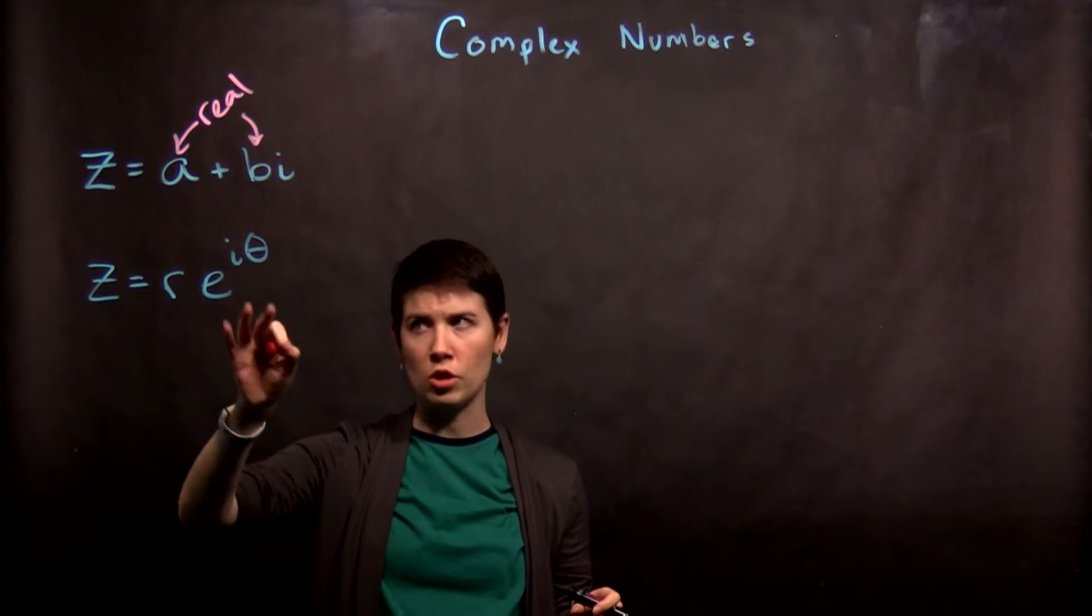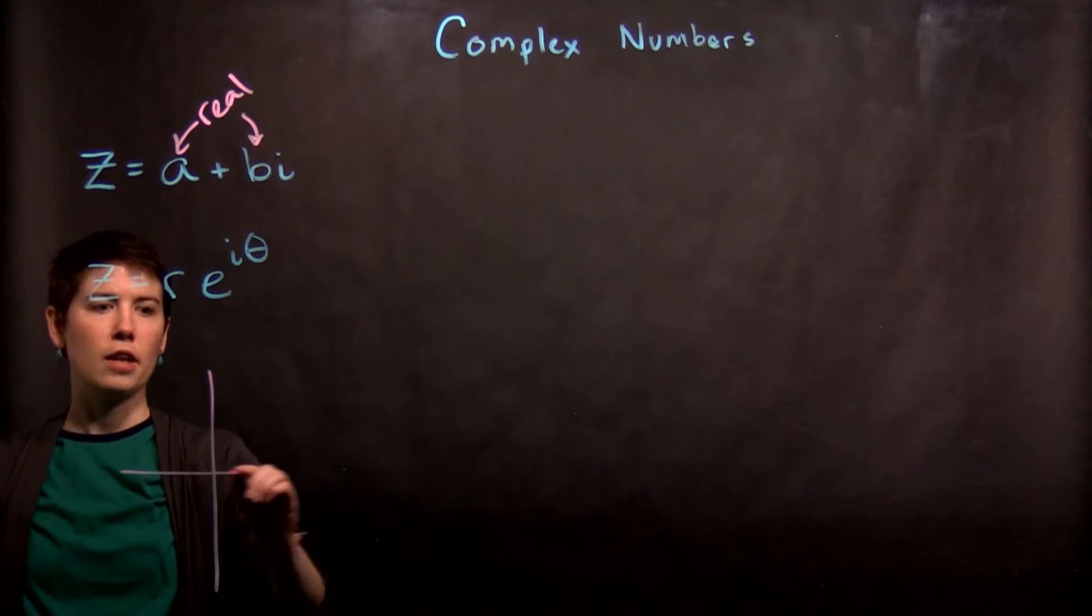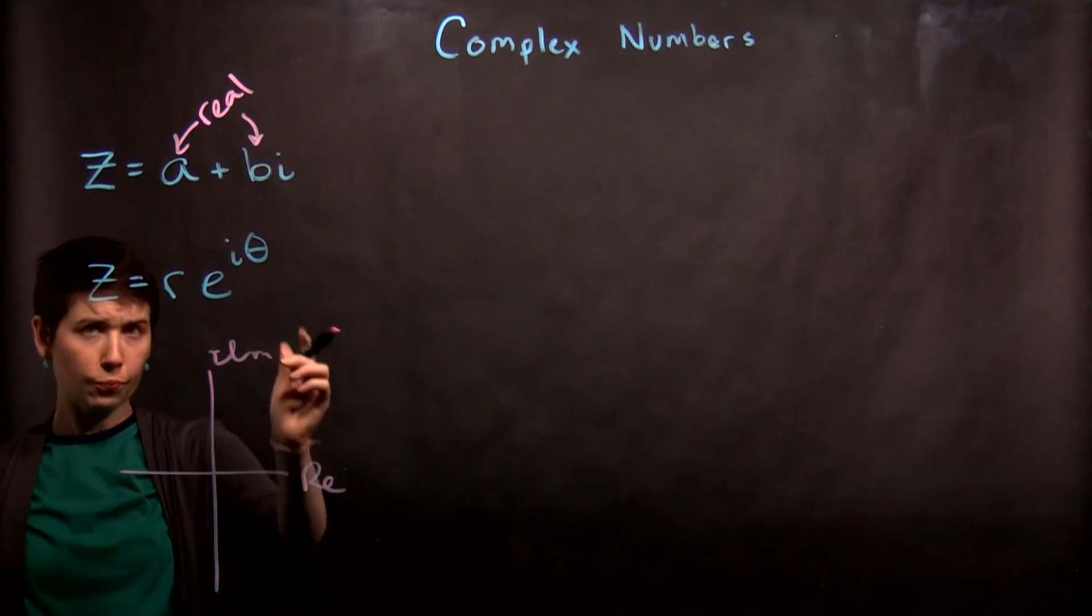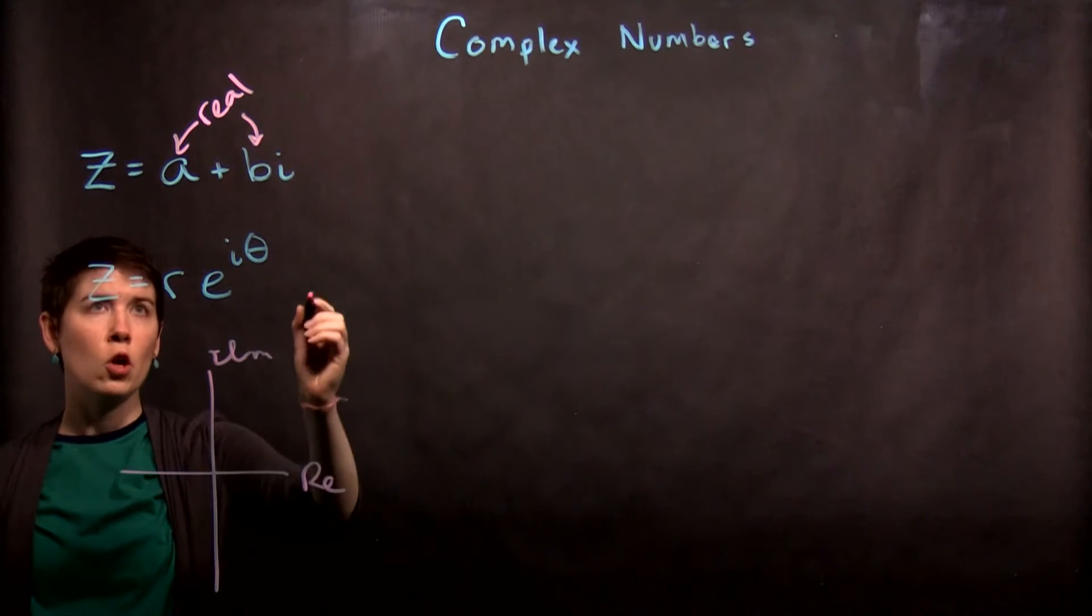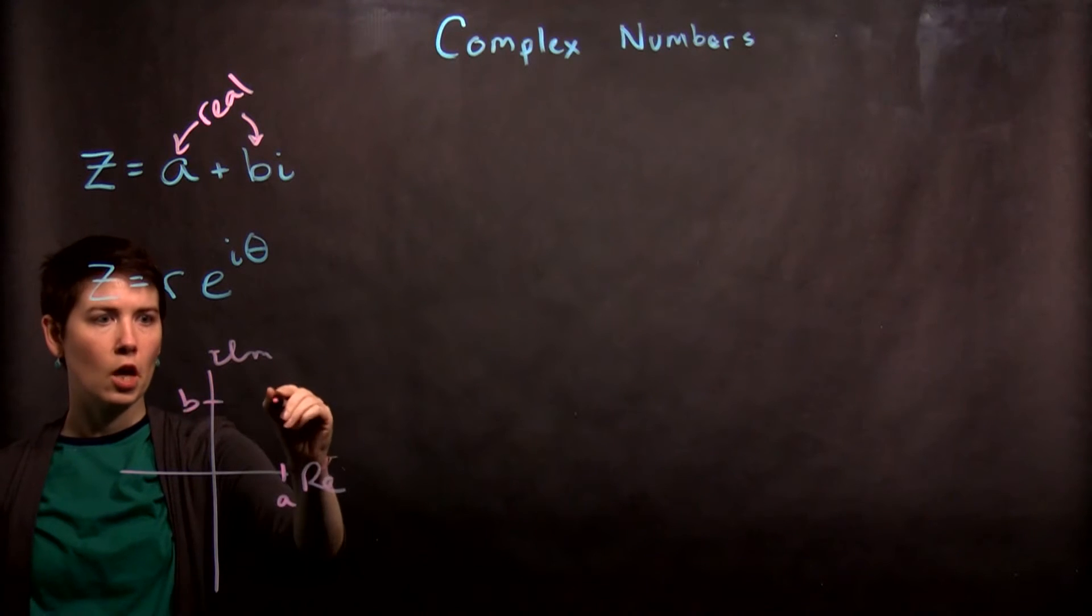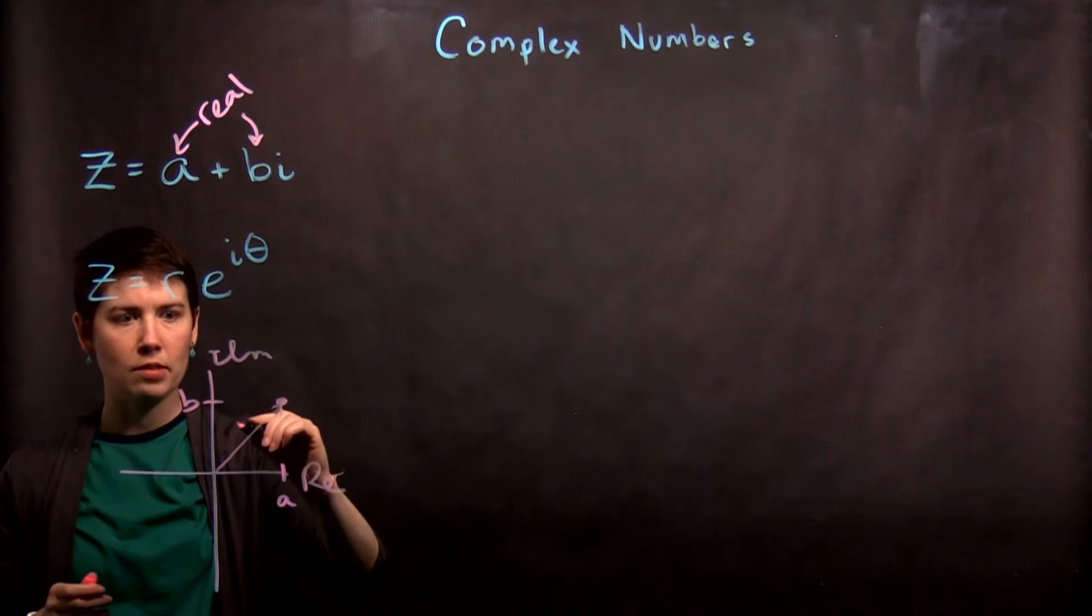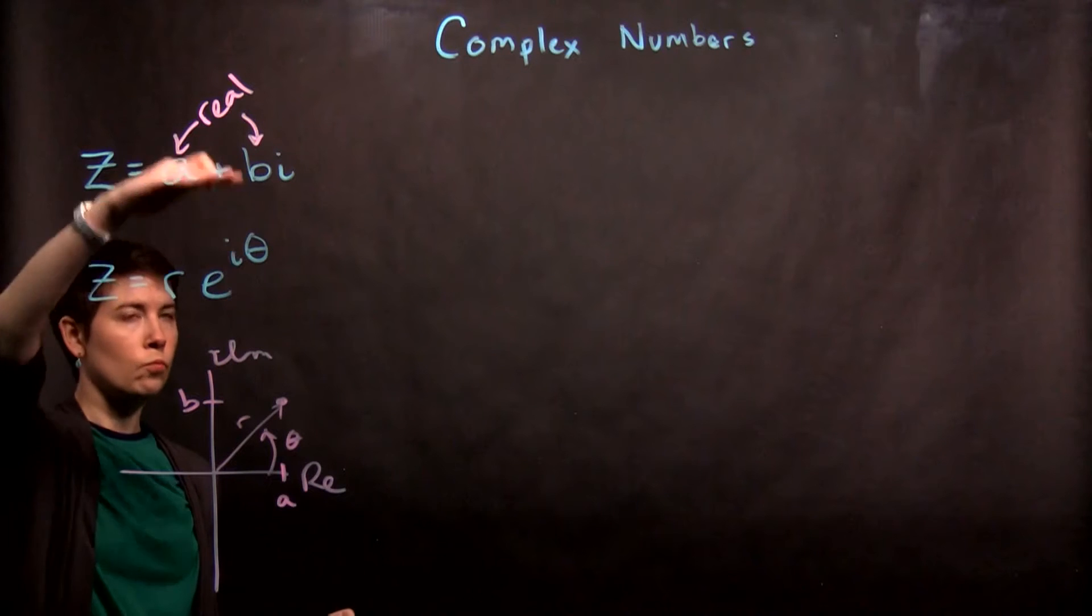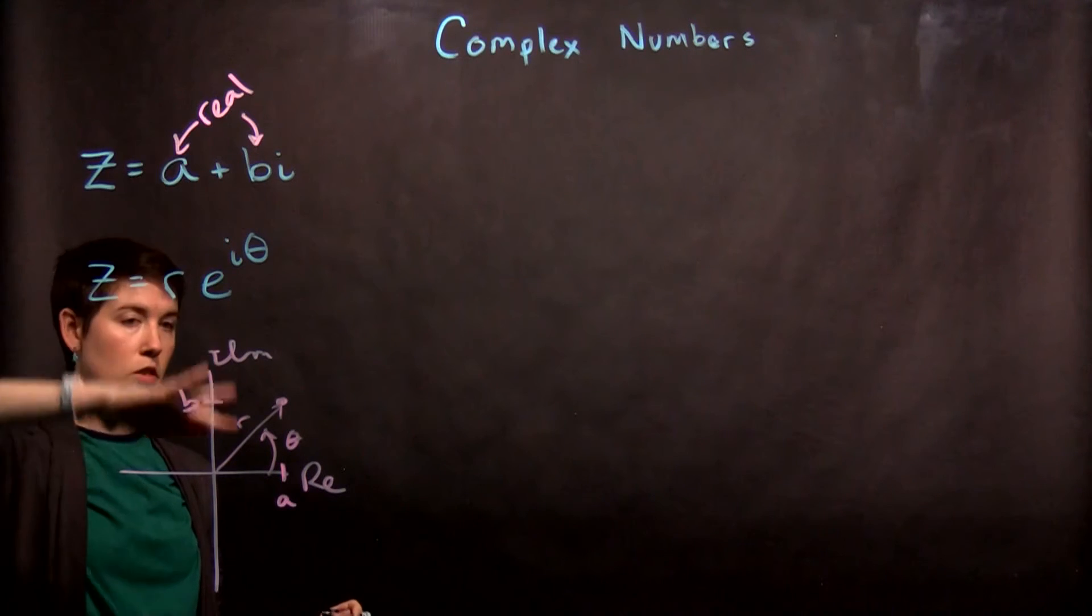This is like a polar representation where we're thinking about the real and imaginary coordinates. So real and imaginary, we can represent the same number in these two different forms. So this is like saying this is a and this is b and our number is here. Another way to represent it is that our number has this magnitude and this angle. So two different ways you can think of this as like Cartesian and polar in this complex plane.